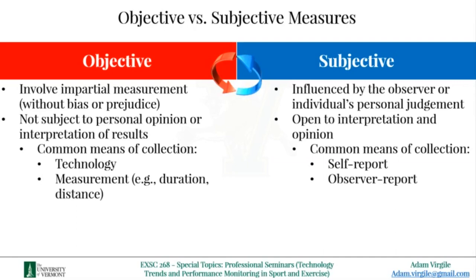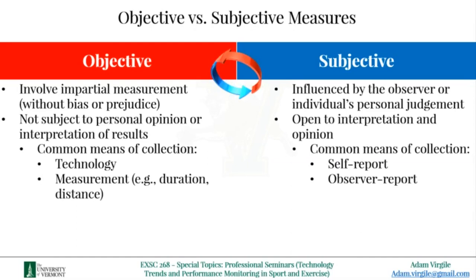Subjective measures, on the other hand, can be influenced by the personal judgments of an observer — which is you, the practitioner — or from the individual from whom you're taking the measurement, the athlete or exerciser. These measurements are subject to interpretation and opinion. Examples might be rating of perceived exertion, or RPE — how hard a training session was on a scale of zero to ten — or a coach's rating of how hard an athlete performed or tried in that session. A non-sport example would be a teacher who gives grades; although a rubric is generally followed, the teacher's interpretation of that rubric influences the grade the student might get.